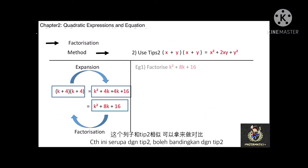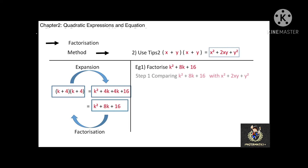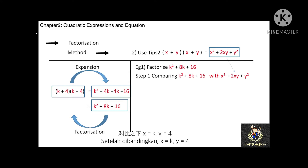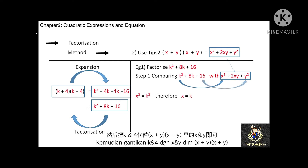Next, factorize k squared plus 8k plus 16. This algebraic expression is similar to Tips 2, so we use Tips 2 to perform the factorization. Comparing k squared plus 8k plus 16 with x squared plus 2xy plus y squared, we find x equals k and y equals 4 (since 16 equals 4 squared). Substituting x equals k and y equals 4 into (x plus y)(x plus y) gives the answer: (k plus 4)(k plus 4).